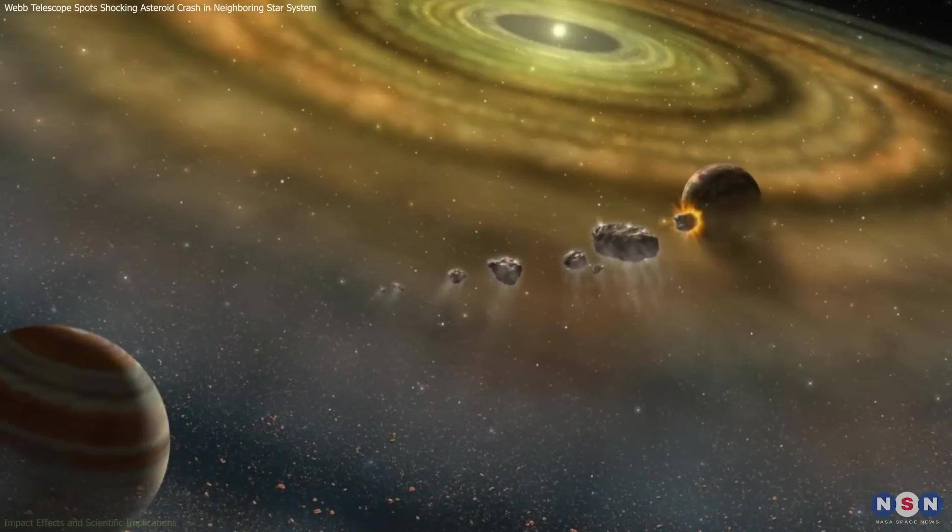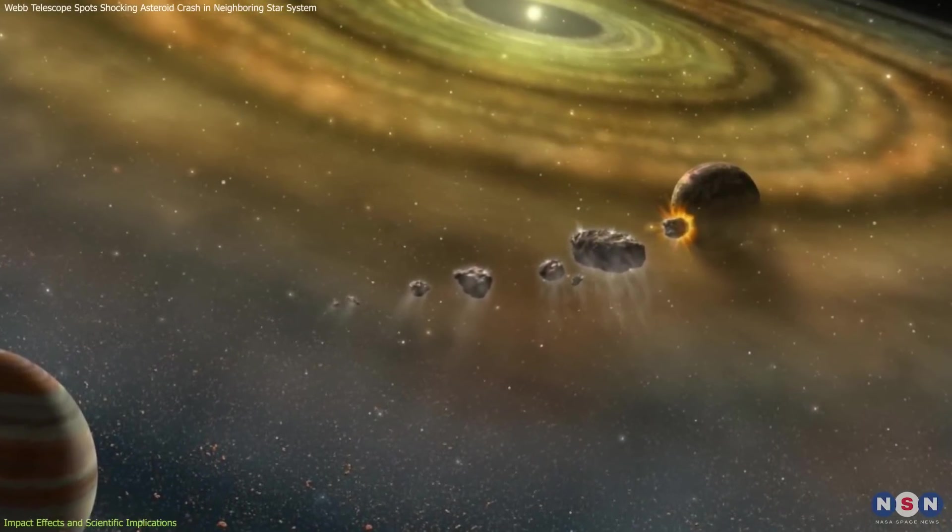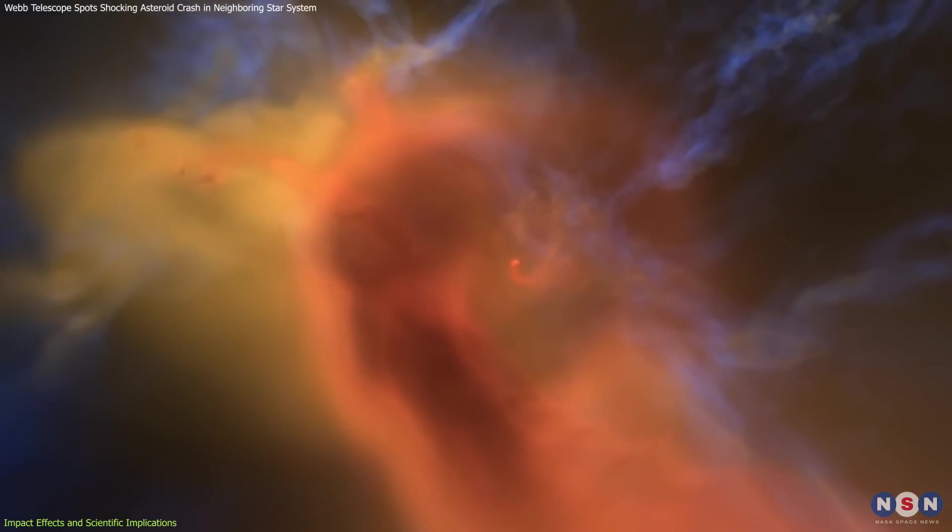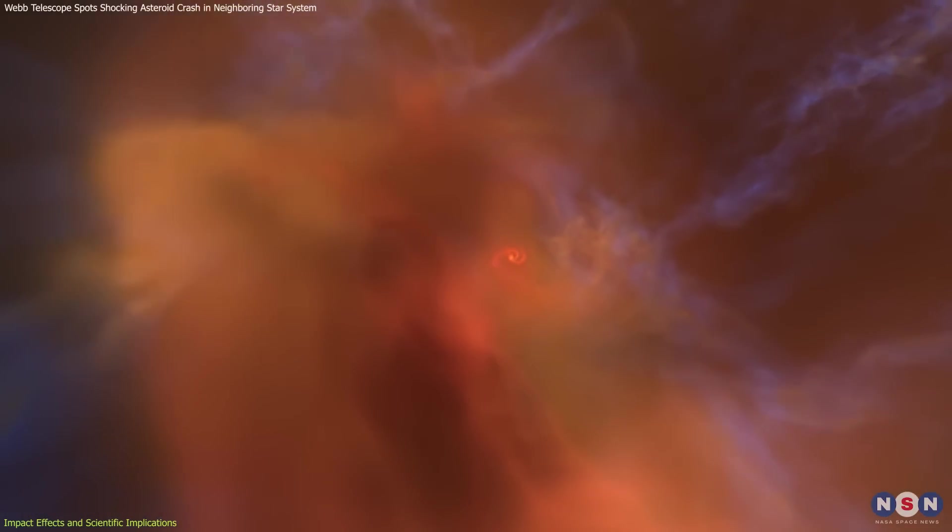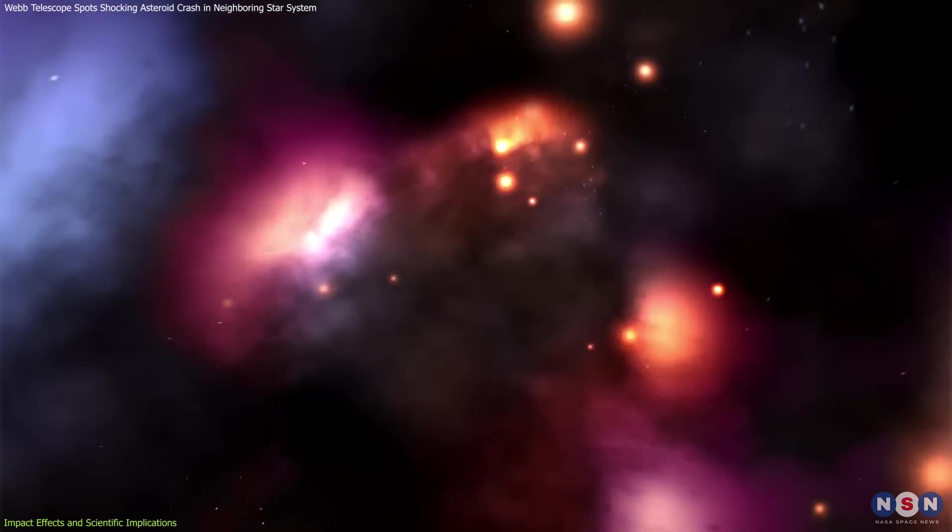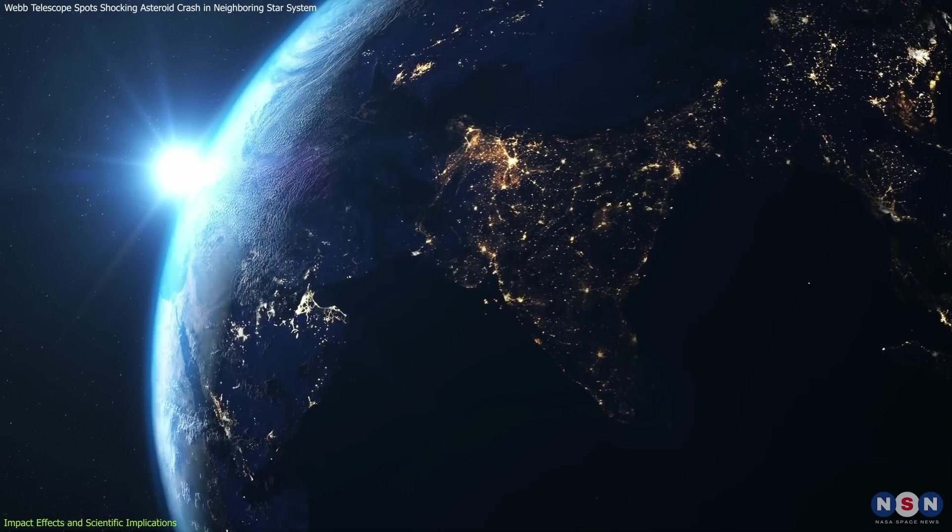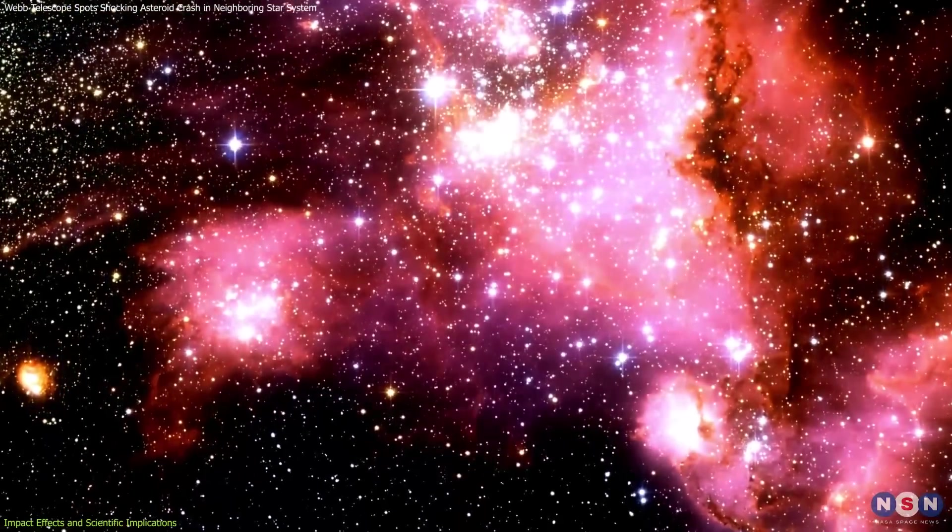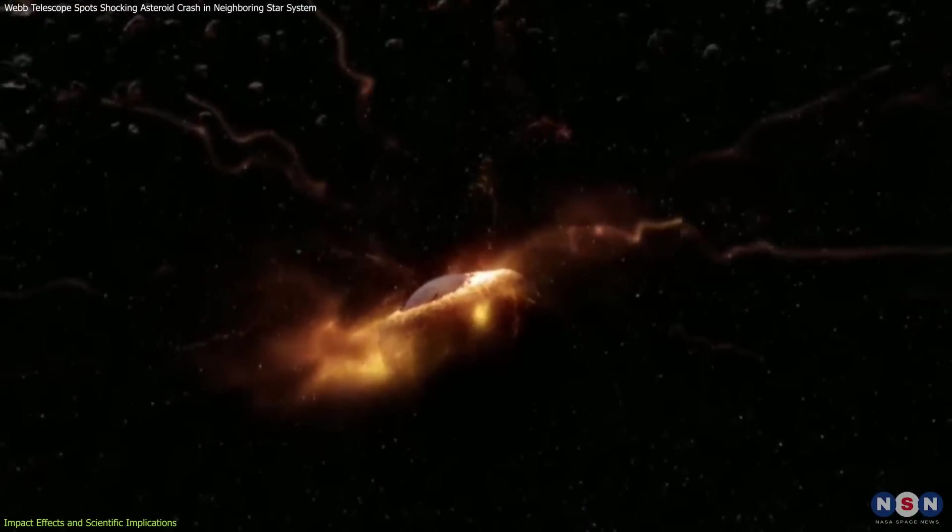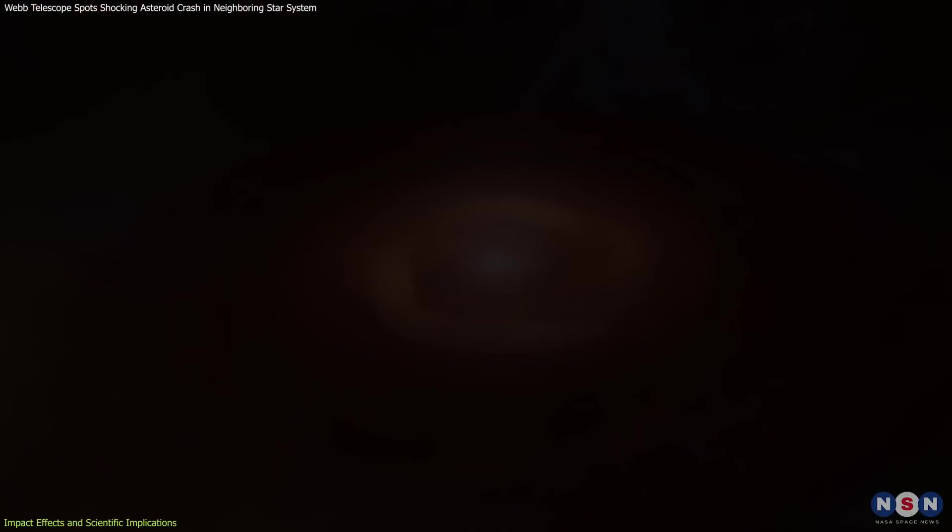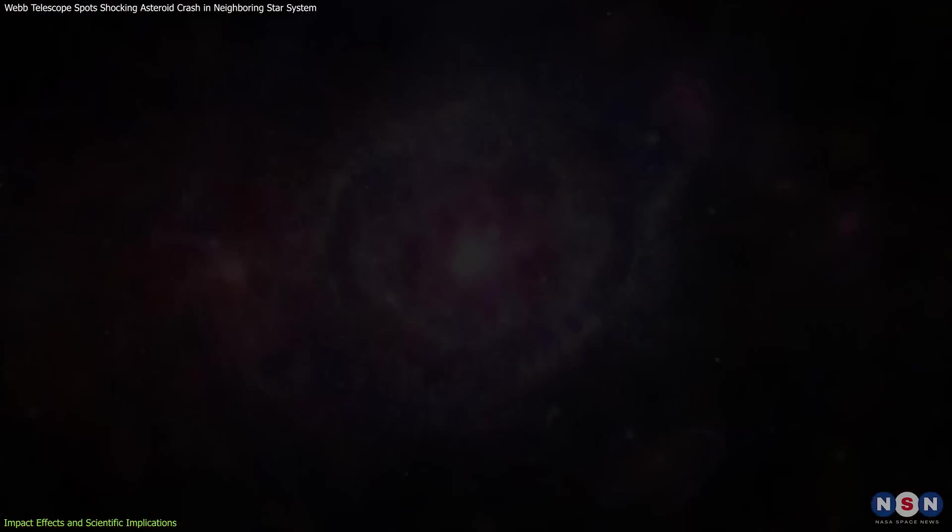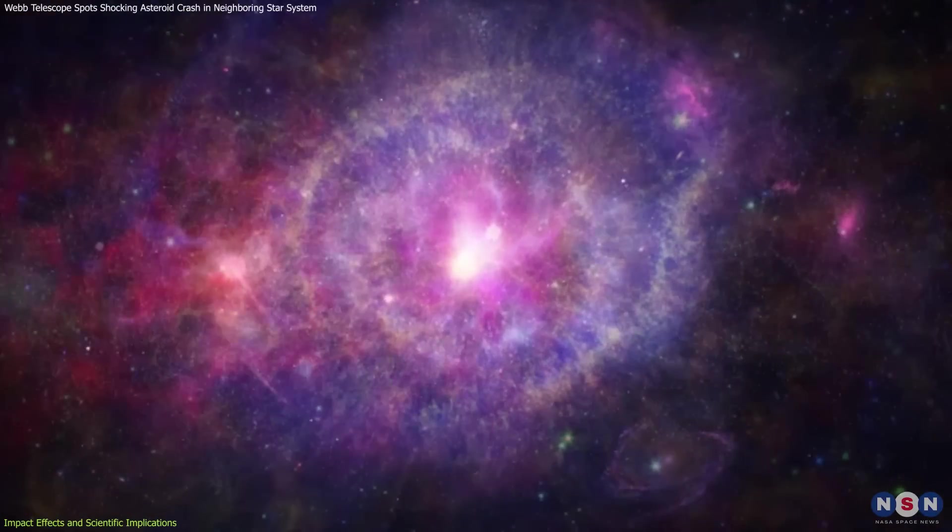The collision between the giant asteroids in the Beta Pictoris system resulted in a vast cloud of dust. The evidence suggests that the dust was composed of crystalline silicates, minerals commonly found around young stars and on Earth. The impact likely generated significant shockwaves, ejecting debris and creating craters on the colliding bodies. The dust particles, pulverized into sizes smaller than pollen, were dispersed outward by the radiation from Beta Pictoris.